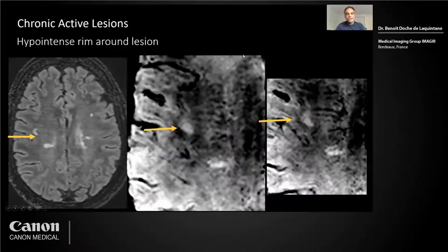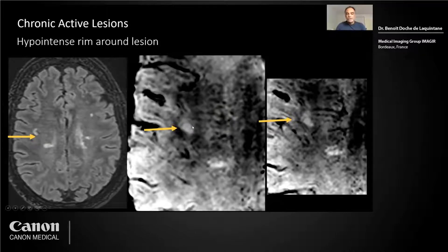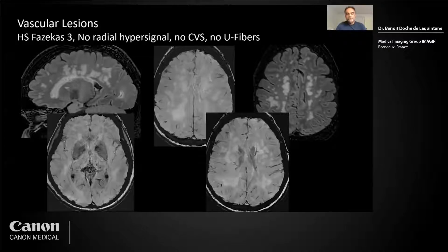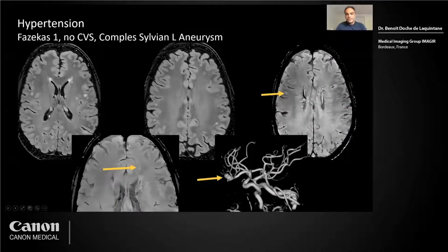You can have a chronic active lesion — a current topic in MS — with a hypointense rim around the lesion. It's more frequent in progressive MS. Here is an example of the linguistic differential: it's only small vessel disease at Fazekas grade 3. There is no radial hypersignal, no central vein sign, and no positive U-fibers. Another example is hypertension at Fazekas grade 1 — again, you don't see a black dot inside the lesion, and there was a complex CVM on the left.